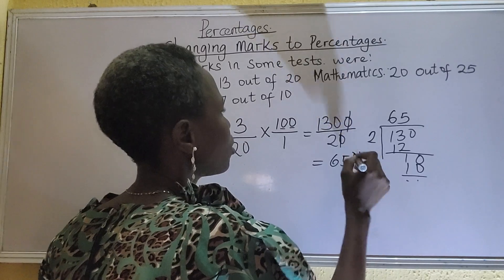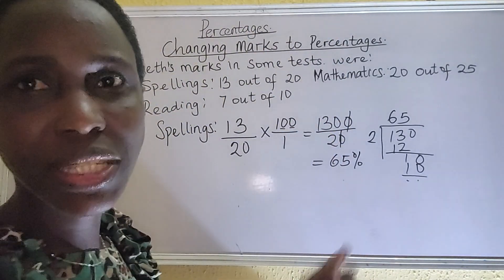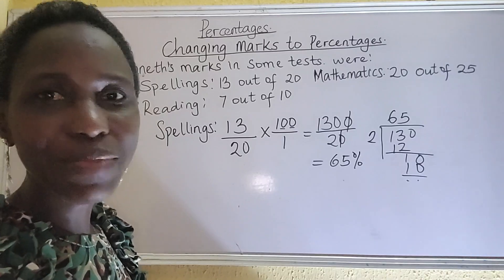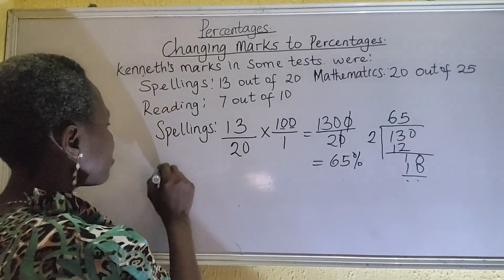So in spellings, Kenneth got 65%. I hope that's clear. Then the second one in mathematics.